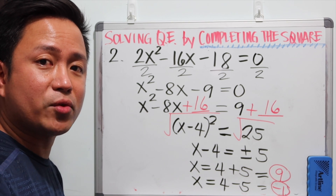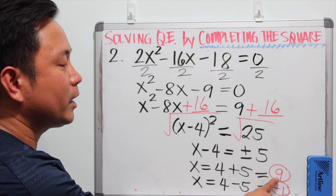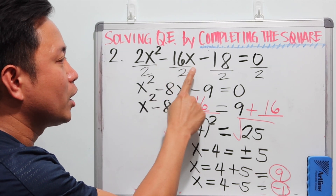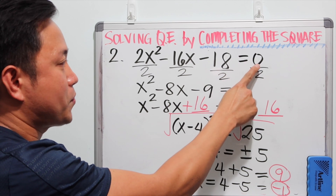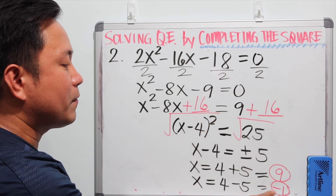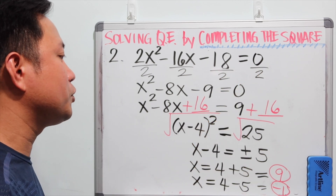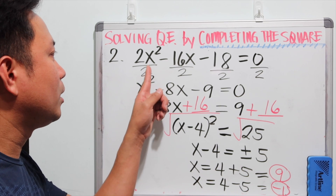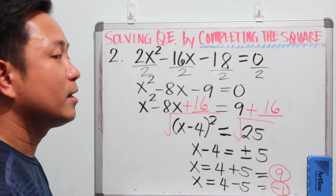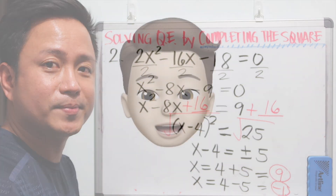You can always check your answer. When you plug in 9 for x, you should get 0 on the right side. Same thing with negative 1 — when you substitute negative 1 into all the values of x, the equation should be true.